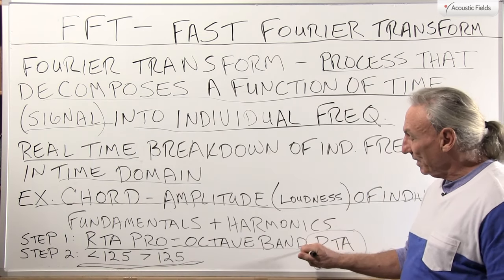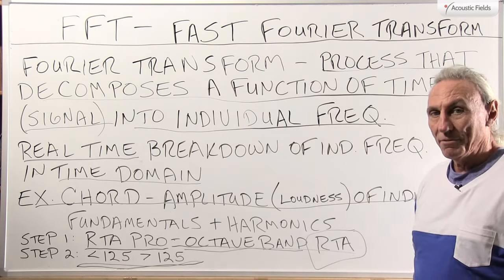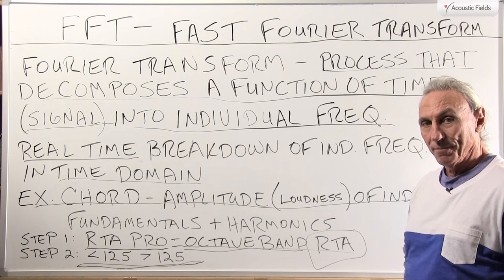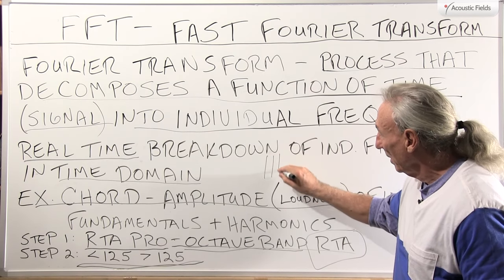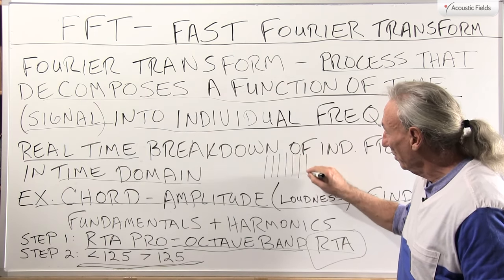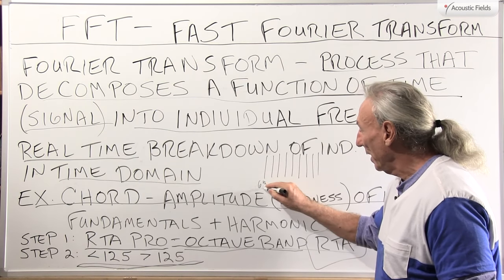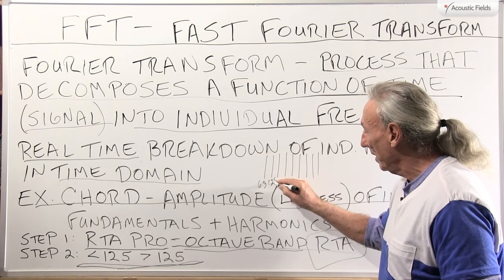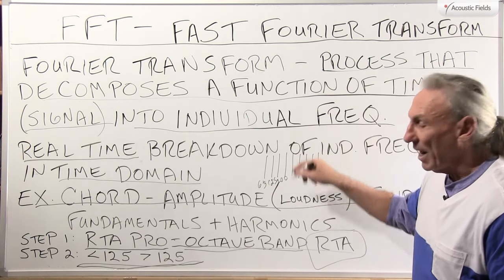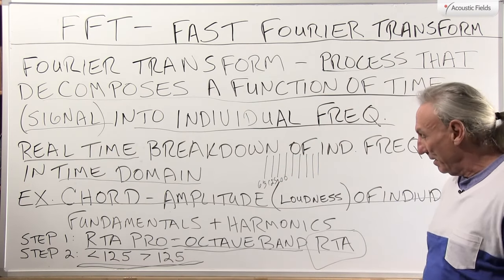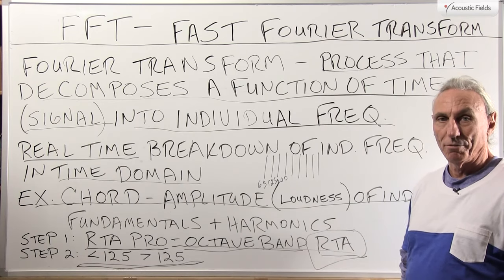Then when you become familiar with the octave bands, switch over to the FFT function, and what you're going to see is individual frequencies within all those octave bands. You're going to see 63 cycles, you're going to see 125 cycles, you're going to see 200 — you're going to see each octave band of the RTA broken down into individual frequencies.